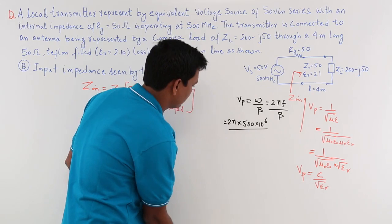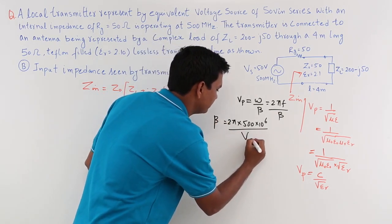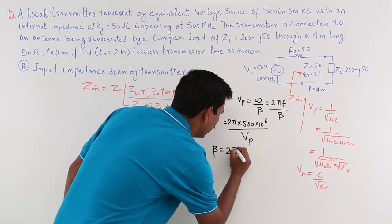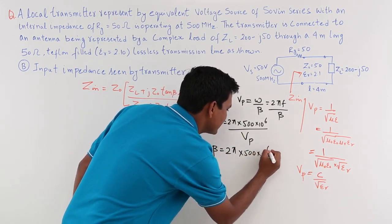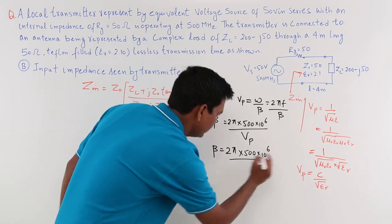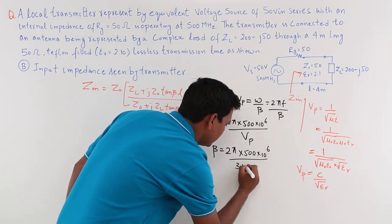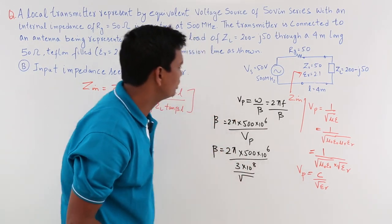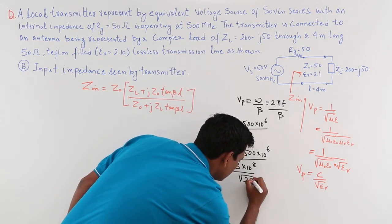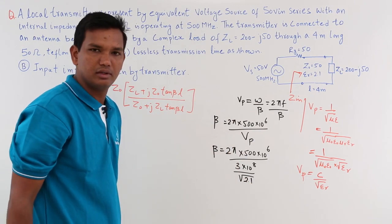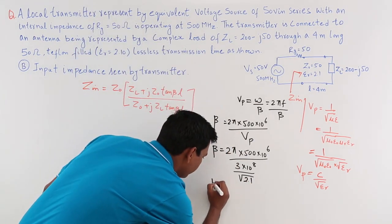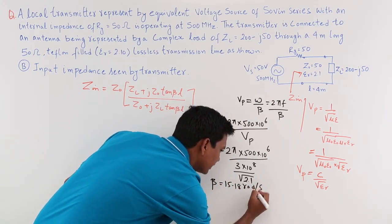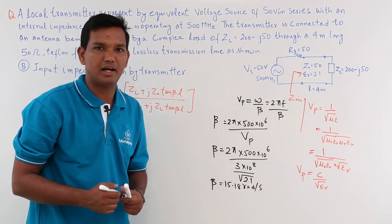What I am going to do is substitute Vp and solve for β. Beta equals 2π × 500 × 10⁶ divided by Vp, which is C divided by √(ε_r) = 3×10⁸ / √2.1. If you solve this in your calculator, you get β as 15.18 radians per meter. That will be the value of β.